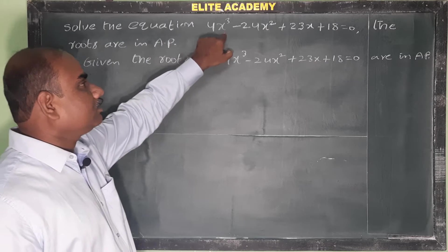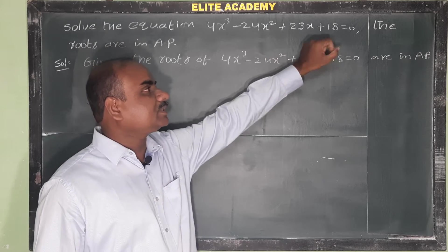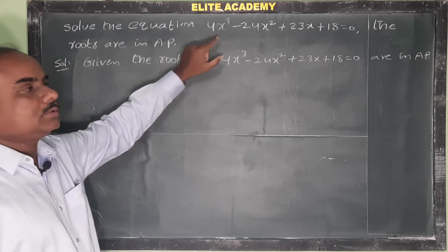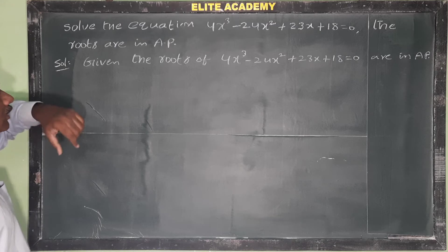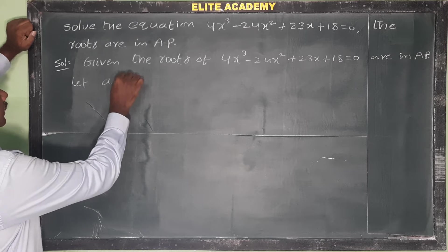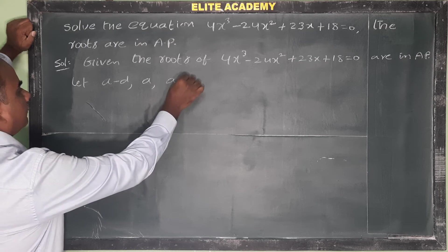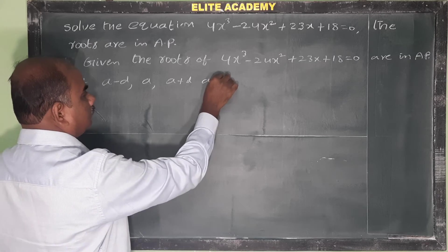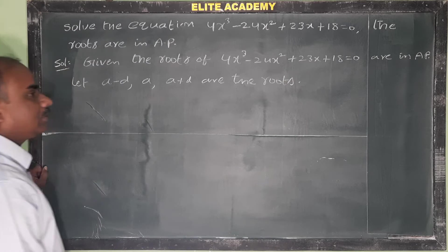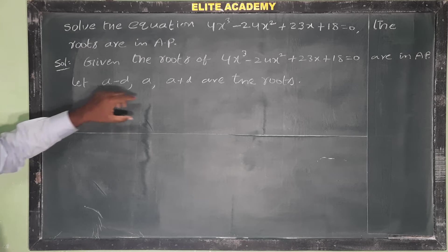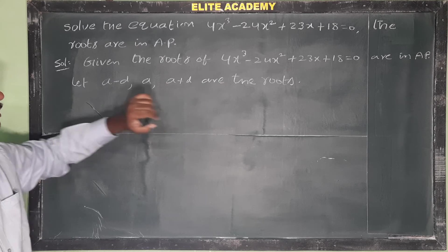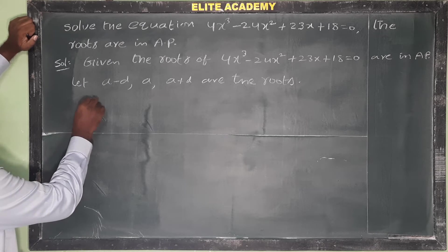Solve the equation 4x³ minus 24x² plus 23x plus 18 equals 0. The roots are in AP (Arithmetic Progression). For a cubic equation with roots in AP, let the three roots be a minus d, a, and a plus d.